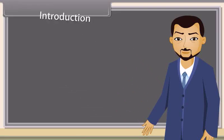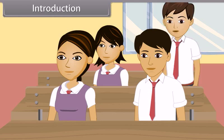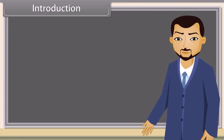Students, today we are going to learn biotechnology and its processes. First of all, define the term biotechnology. Sir, it is a technology that is used to modify products and make them useful for human life. Very good, Ashish.